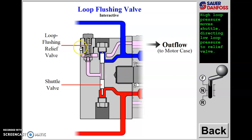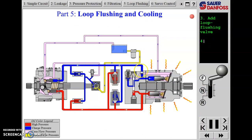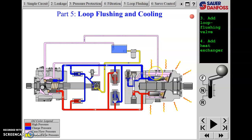The primary function of the flushing relief is not to control charge pressure — it is to ensure that some return flow from the motor crosses the shuttle valve and flows through the flushing relief. That adds flow to the case drain of the motor. By adding case drain flow to the motor through this path, we're dumping extra oil into the case that helps take heat out of the motor, and then it flushes back toward the reservoir.